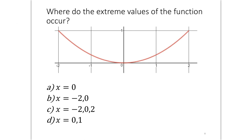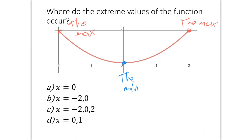Plicker question: where do the extreme values of the function occur? Extreme values mean absolute maximum or absolute minimum. Looking at the graph, the absolute minimum occurs at one location and the absolute maximum value occurs at two locations. The maximum value is 1 and the minimum value is 0, but those are y-values. The question asks where, meaning x-values: the minimum is at x = 0, and the maximum occurs at x = −2 and x = 2. The correct answer is c.